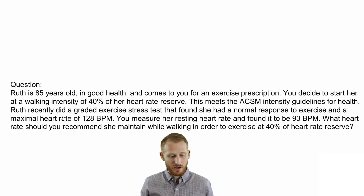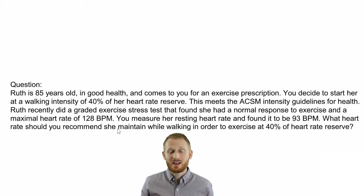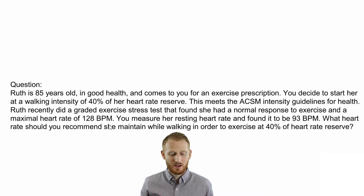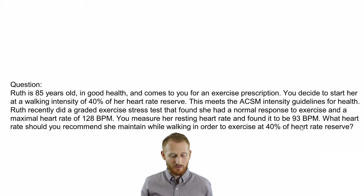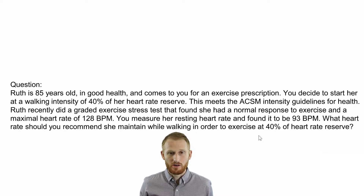Recently, Ruth went through a graded exercise test at the hospital where it was found that she had normal responses to exercise and her maximum heart rate was 128 beats per minute. You measured her resting heart rate and found it to be 93 beats per minute. So what heart rate should you recommend she maintain while walking in order to exercise at 40% of heart rate reserve?